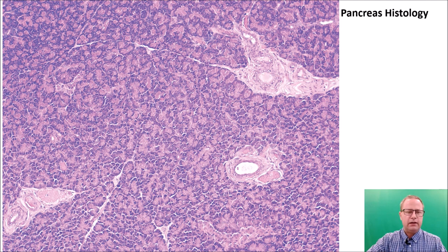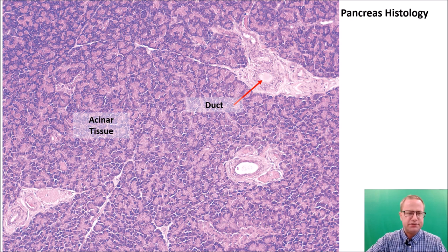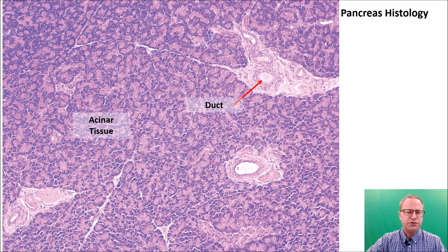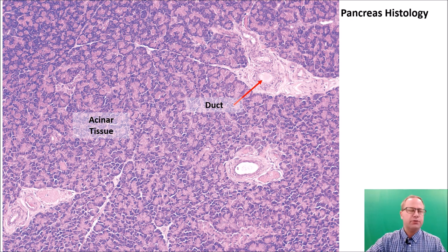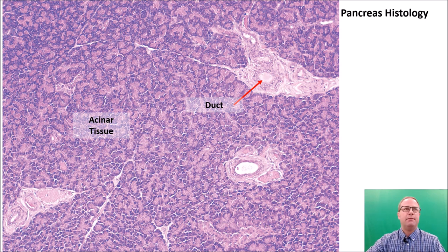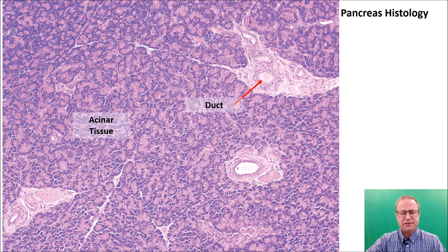Zooming in to about 100x, we can start to see the acinar tissue. Acinar tissue is made up of acini — sac-like glands that secrete the exocrine component of the pancreas. The pancreas has endocrine and exocrine functions, and its tissue is about 90% acinar tissue — making enzymes that digest proteins such as trypsin, enzymes that digest lipids such as lipase, and also bicarbonate. So 90% of the pancreas's real estate is devoted to that exocrine function.